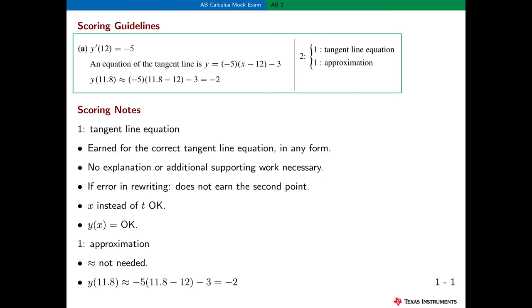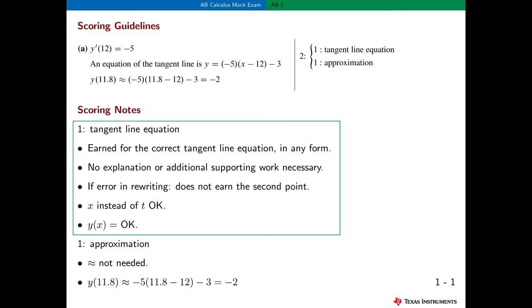Here are the scoring guidelines for this problem. Part A is worth two points: one point for the tangent line equation and one point for the approximation. Here are some interpretations of these guidelines to help award points and to prepare for problems like this on the next AP Calculus exam. The first point is for a correct tangent line equation. Notice that the problem does not ask for this equation, so theoretically the student does not have to present one. But it seems that this is the logical way to start the problem. And remember, the scoring guidelines are used for awarding partial credit. There is no explanation or additional supporting work necessary here. The student could simply present a tangent line equation.